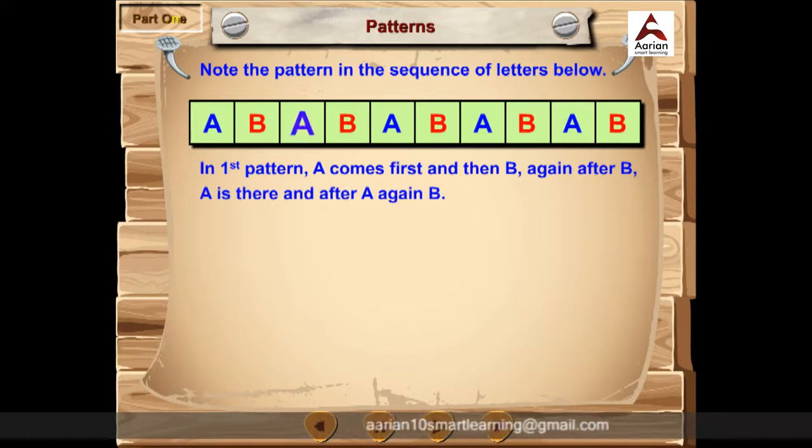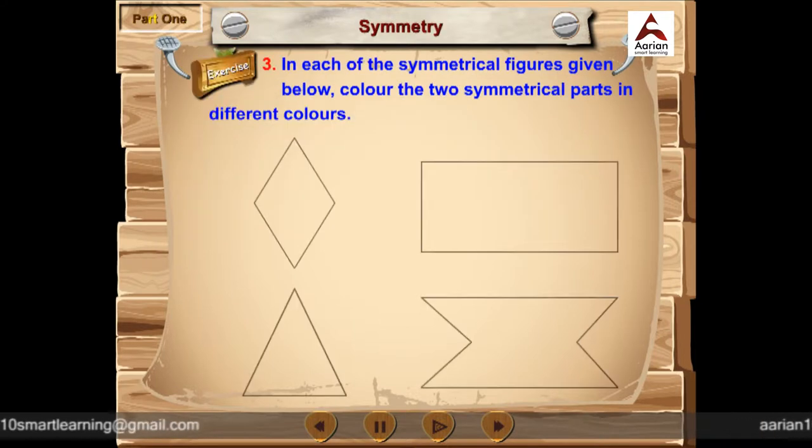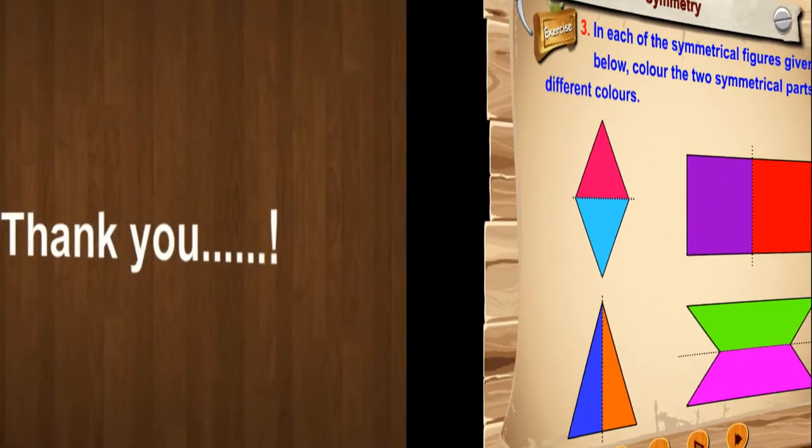A comes first and then B. Again, after B, A is there and after A, again B. Thus, the sequence is followed as AB, AB, AB, AB, AB and so on. In the second pattern, A comes 2 times and then B. That is pattern is AA, B, AA, B and so on. The figures are as shown. Then their axis of symmetry is drawn with the dotted line and the figures are coloured with the different colours, as shown.